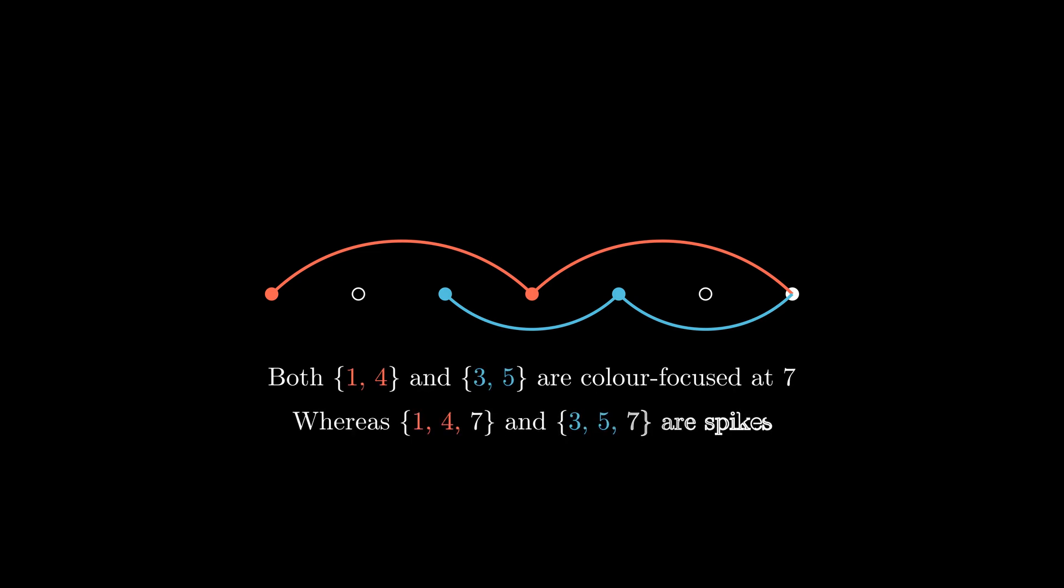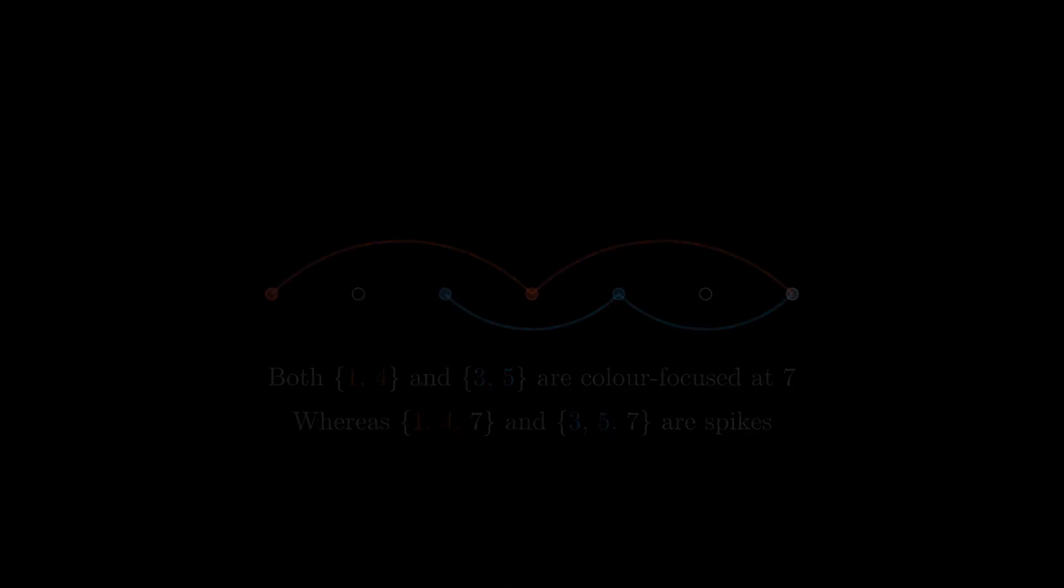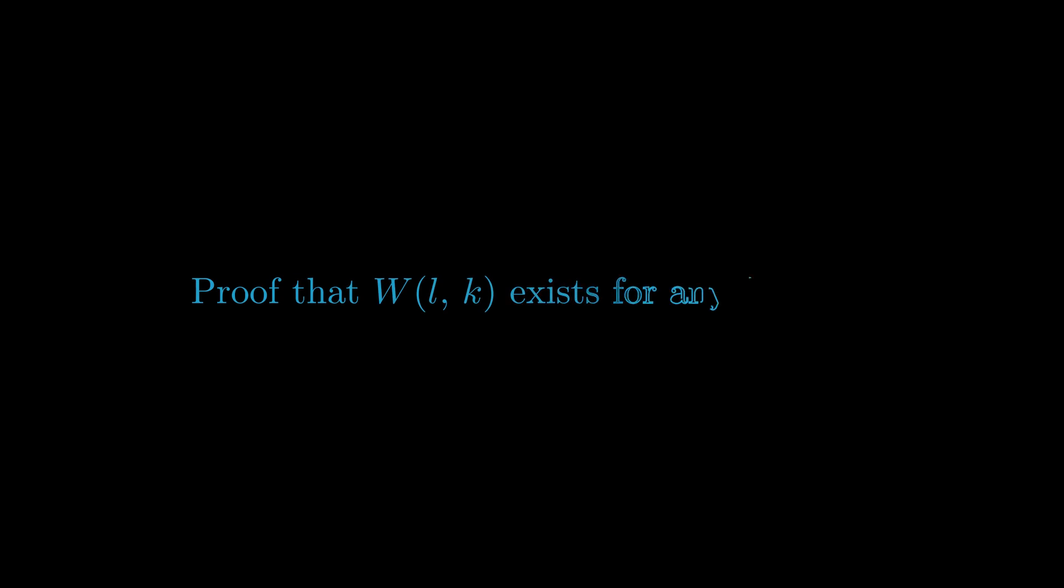Here are some of the terms that we will be using in our proof. Consider the numbers 1 to 7 colored in the following way. We can say that 1, 4, and 3, 5 are color-focused at 7, whereas 1, 4, 7 and 3, 5, 7 are spikes.